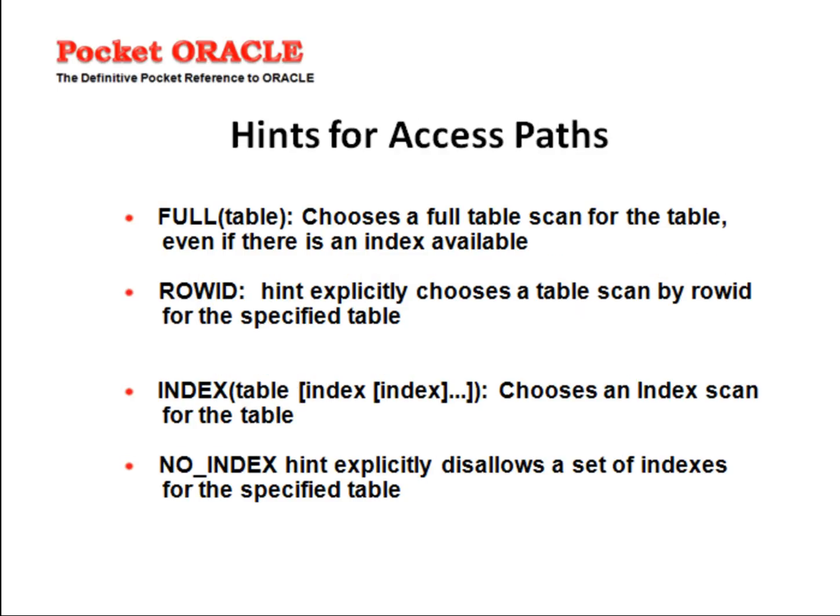Hints for access paths. FULL: this hint chooses a full table scan for the table, even if there is an index available. This will be efficient if you are retrieving more than 50% of the rows in the table. ROWID: this hint explicitly chooses a table scan by row ID for the specified table. The INDEX hint chooses an index scan for the table. NO_INDEX hint explicitly disallows a set of indexes for the specified table.